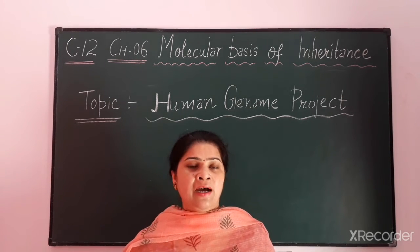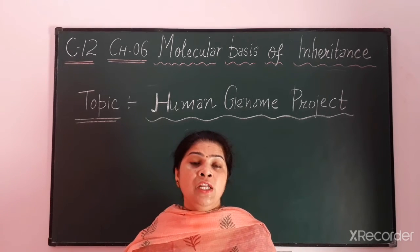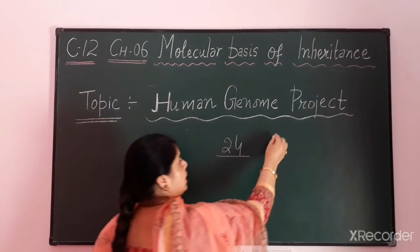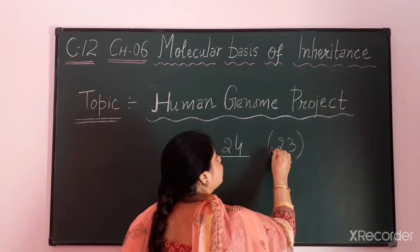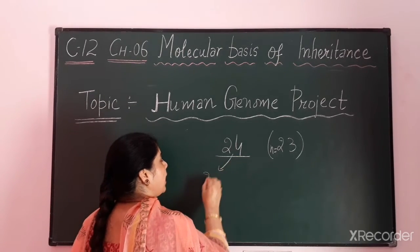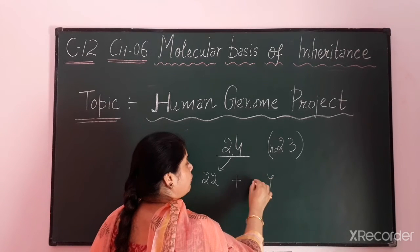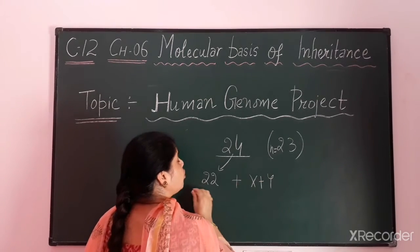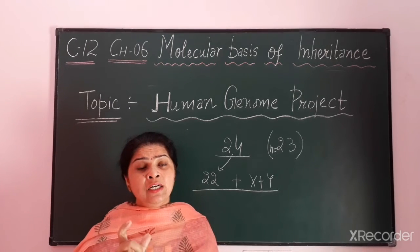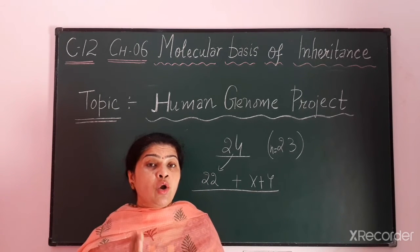The Human Genome Project was started in the year 1990. The main aim was to determine the total sequence of nucleotides across 24 chromosomes. Our haploid number is 23, but 24 chromosomes needed to be sequenced — 22 autosomes and 2 allosomes (X and Y). In males there is a Y chromosome, in females there is an X chromosome. So the main aim of the Human Genome Project was to find the nucleotide sequences in all these 24 chromosomes.